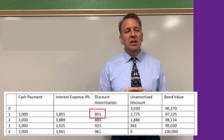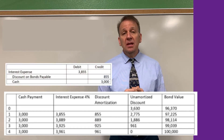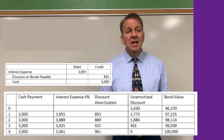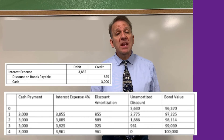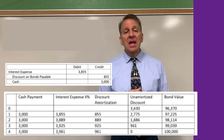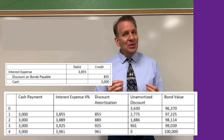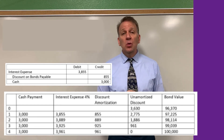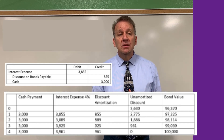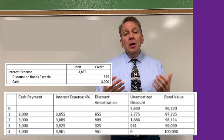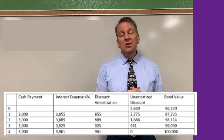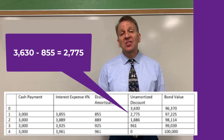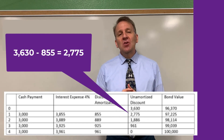The journal entry at the end of the first six months is a debit to interest expense for $3,855, a credit to cash for $3,000 — that's the actual cash paid out — and the difference is a credit to discount on bonds payable for $855. This is a little tricky; you need to go through this a few times. In the amortization table, the discount, which was $3,630, is now only $2,775 because we've used up $855 of that discount.